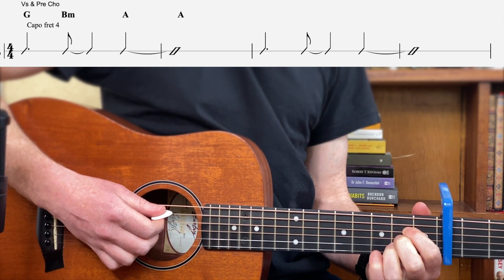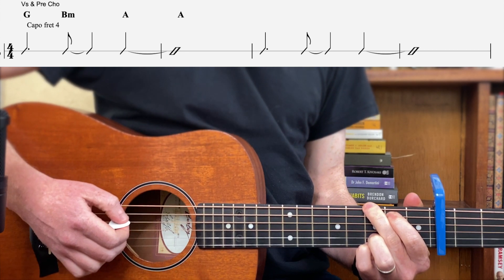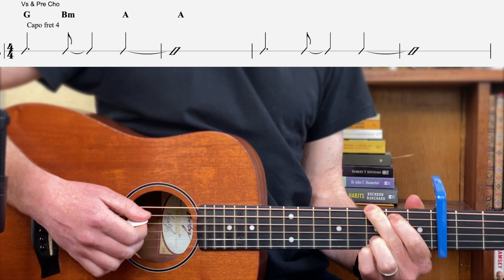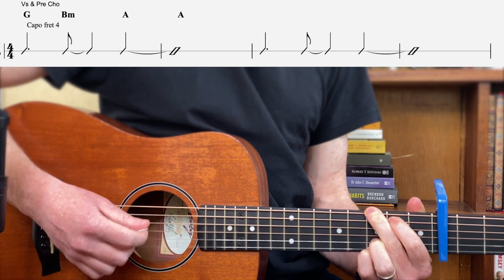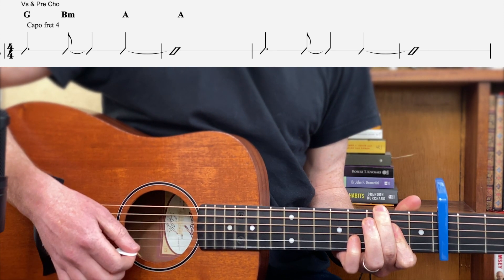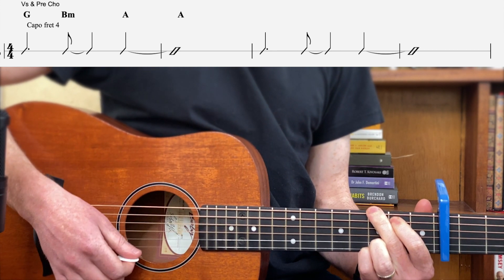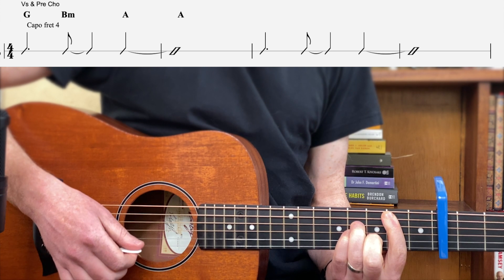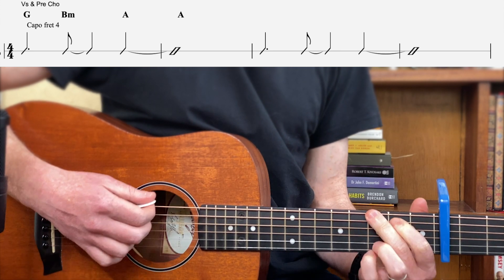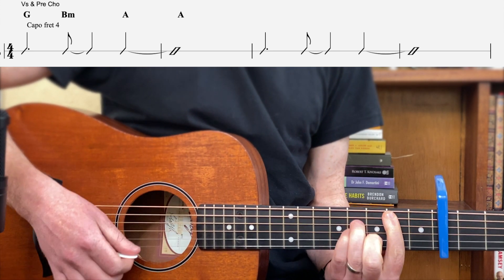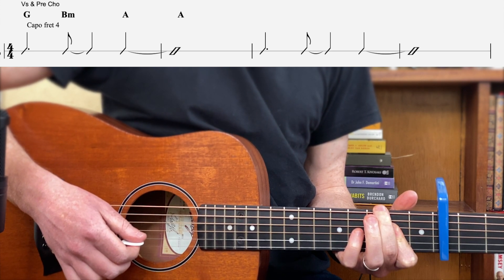Alright, so the verse and the pre-chorus, it goes as follows. They're single strums, it's pretty low tone to begin with. So this covers all the verse and all the pre-chorus. It goes one and two and three and four. I'll do that one more time: one and two and three and four, one two three four.